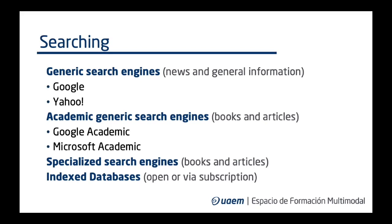Now that you know what you are looking for, it is easier to choose a search engine. When looking for news and general information, generic search engines such as Google or Yahoo are the best choices. But if you are looking for books or academic articles, the best search engines are academic ones, such as Google Academic or Microsoft Academic, or specialized databases such as Web of Science or Scopus, which look into specialized publishers' databases. The problem with this is that a subscription is needed, individual or institutional, to gain access.